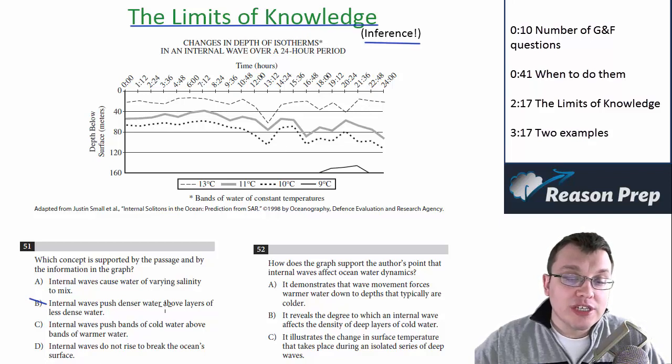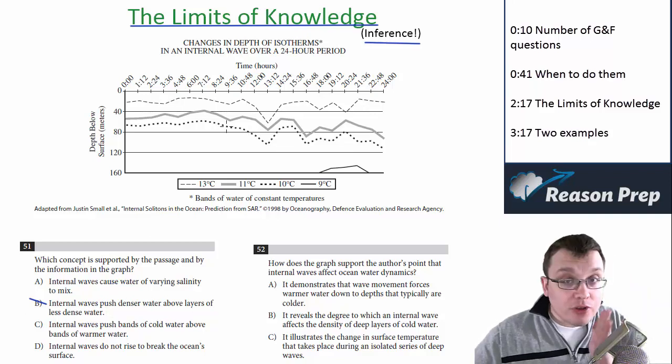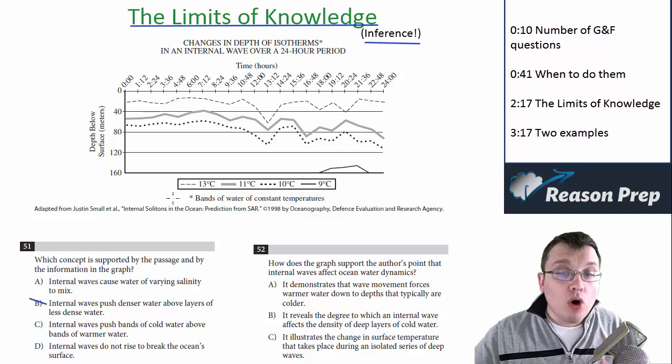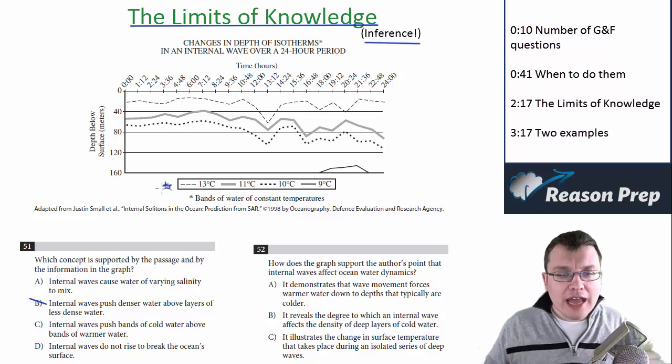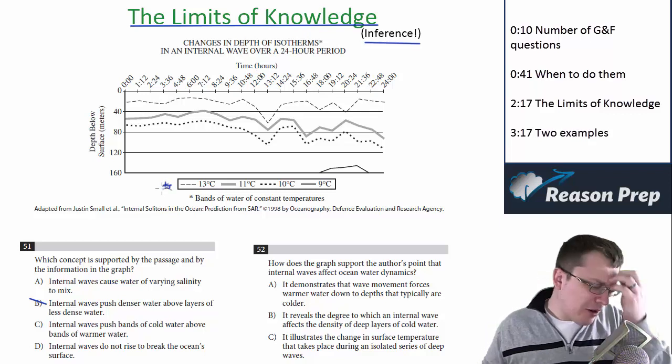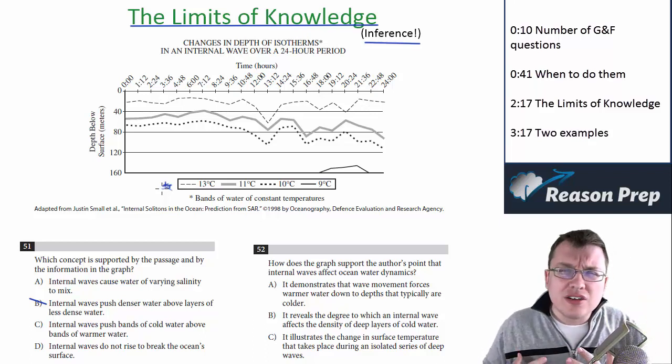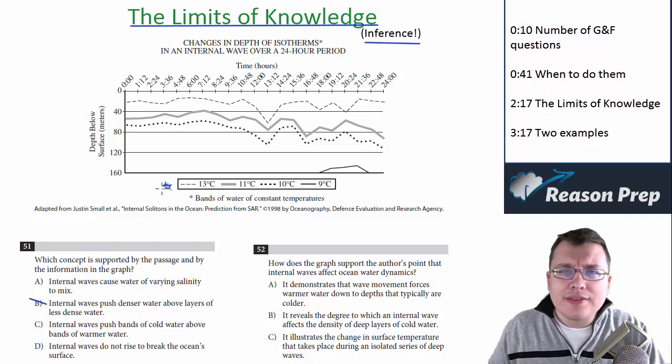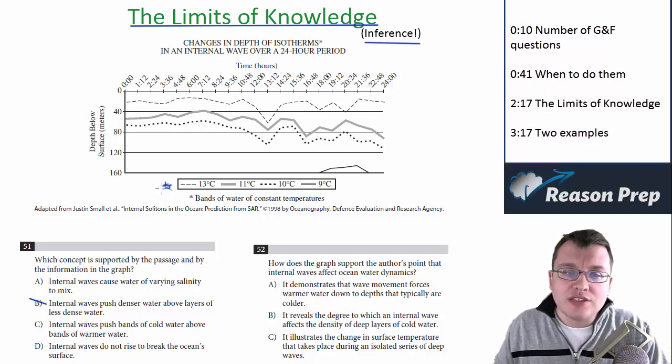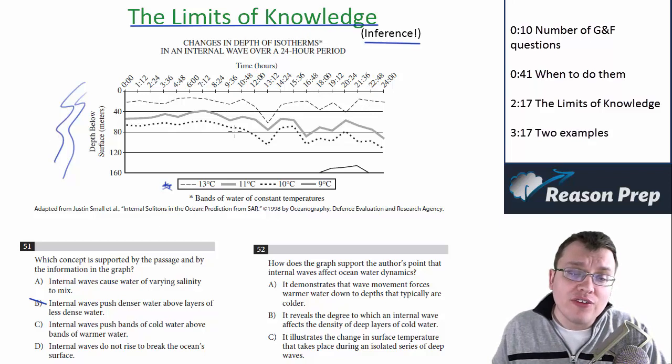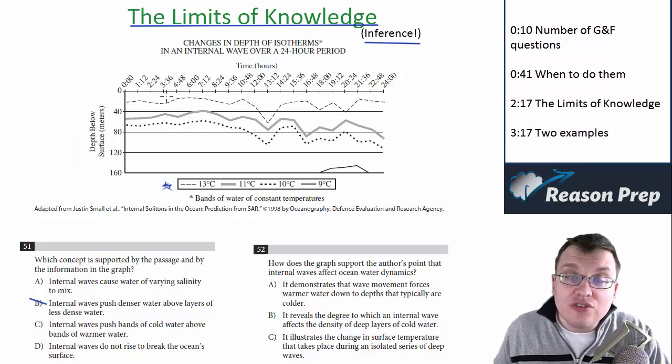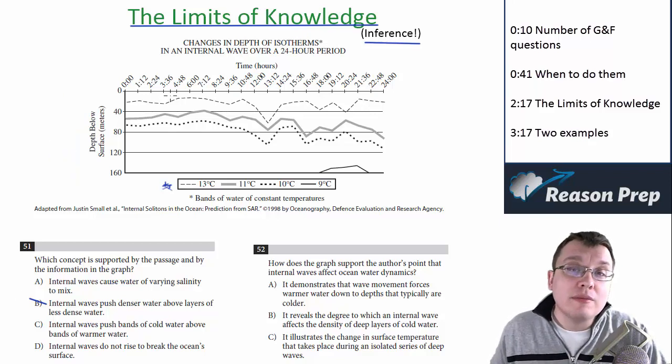For example, 'internal waves push denser water above layers of less dense water.' This says nothing about specifically density of water. All it talked about was different temperatures of water. Now, the passage did say something about the colder water was denser and the warmer water was less dense, something like that. But that's what the passage says. We need to make sure that whatever is being talked about there can be supported in this graph, and it can't be. This says nothing about density. This is where the limits of knowledge come up. We can't make any inferences about density.